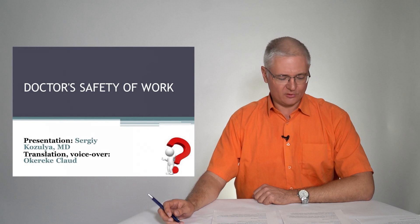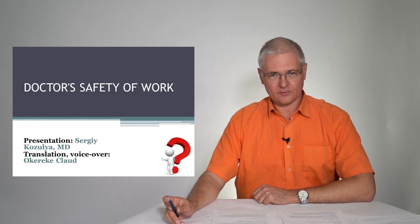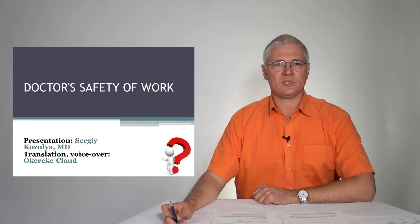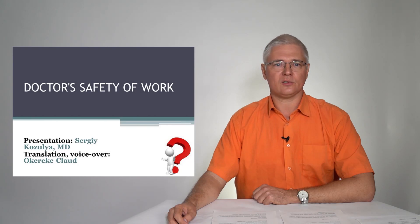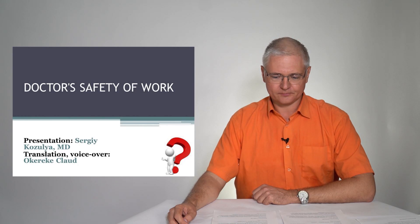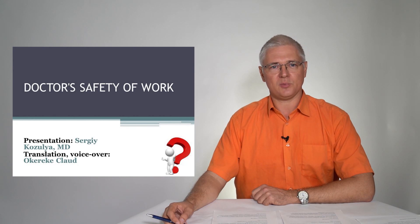Good day everyone. In this lecture, using the example of the Labor Code of the Russian Federation, we will talk about how the government protects its employees. We'll analyze the problem of child labor in Russia and discuss the social protection of pregnant women. Special attention will be paid to the labor protection of medical workers, including adverse physical, chemical, biological, and psychological factors, and possibilities for creating comfortable and safe working conditions.